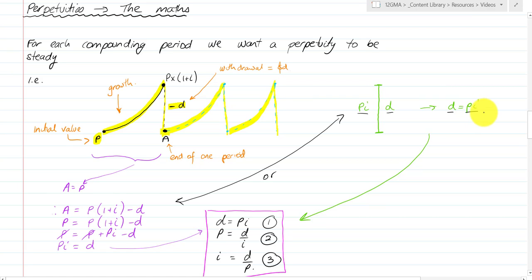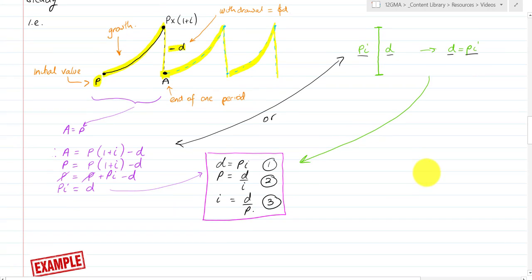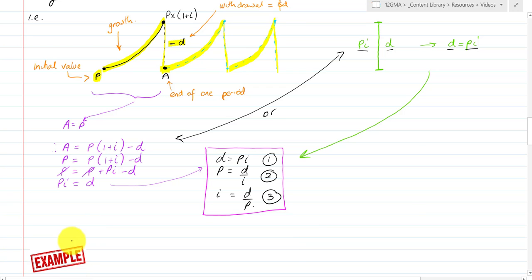Our withdrawal amounts must equal the original value times the interest, so we have A equals P times (1 plus I) minus D. When we finally take off that original P value, we get PI equals D.